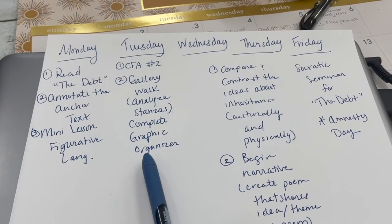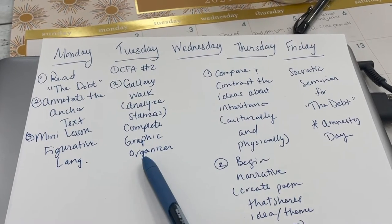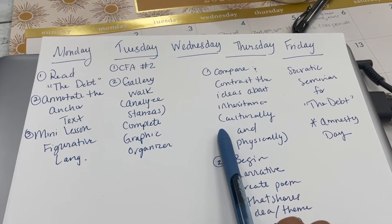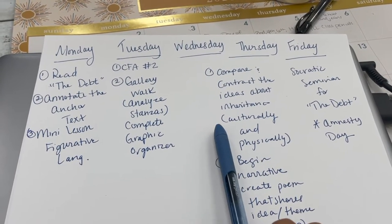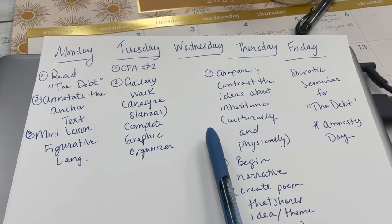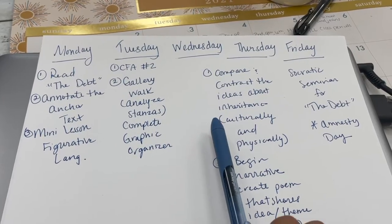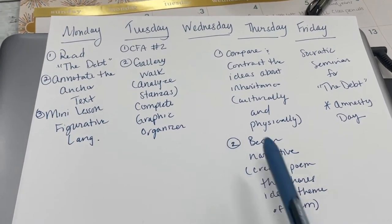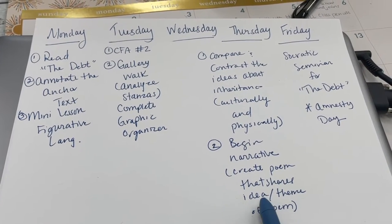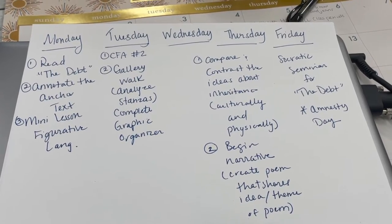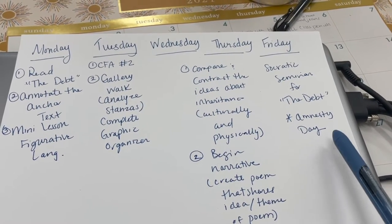Wednesday and Thursday we're going to have 90-minute class periods. We can bring the gallery walk over to Wednesday and Thursday for maybe the first part of class, and then do the compare and contrast looking at inheritance culturally and physically — maybe with a graphic organizer. I'll also give them a chance to begin their poems. Basically I want them to write a poem that shares the same theme as the original poem, "The Debt," the anchor text.